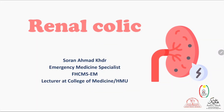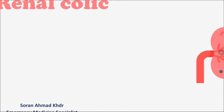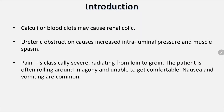Let's talk about renal colic, or sometimes ureteric colic. A calculus or blood clot may cause renal colic and ureteric obstruction. This causes increased intraluminal pressure and muscle spasm, which can lead to severe pain.